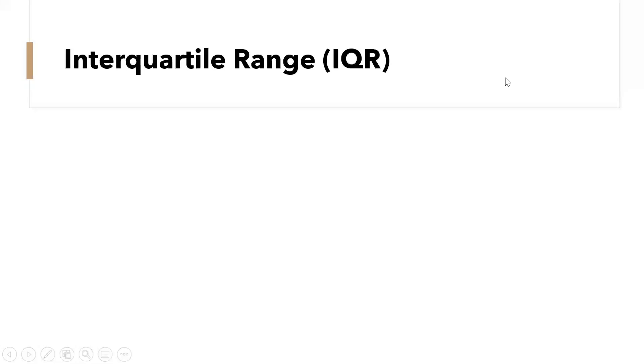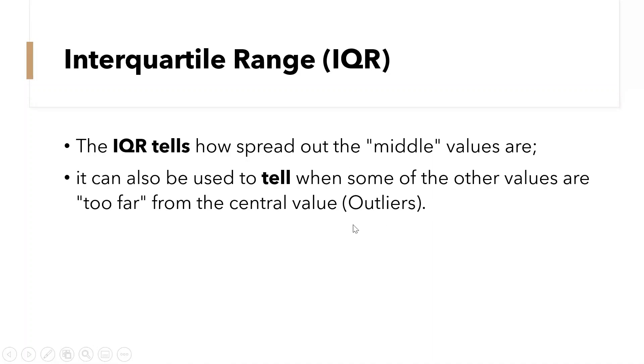Let's talk about interquartile range or IQR. The interquartile range tells us how spread out the middle values are. It can also be used to tell when some of the other values are too far from the central value, or that is what we call outliers.